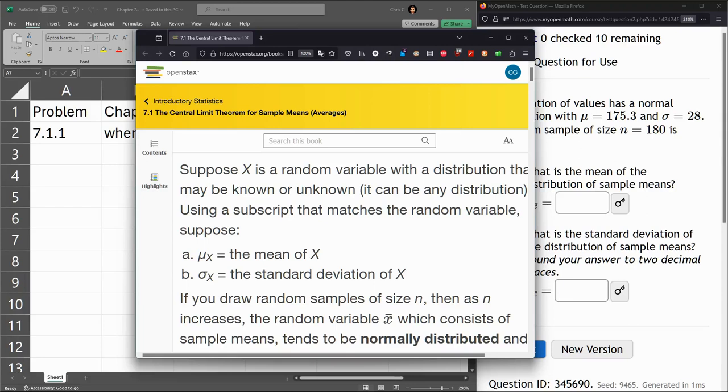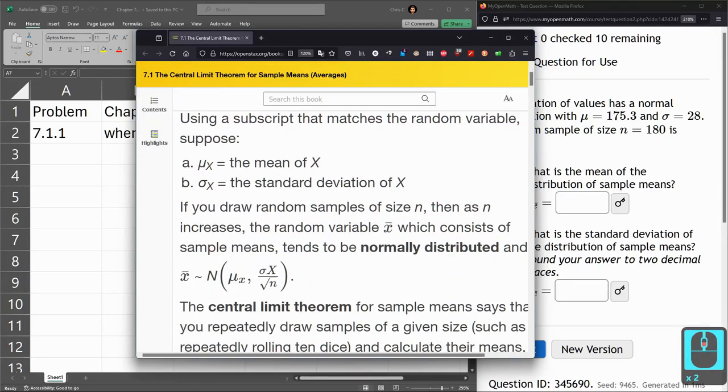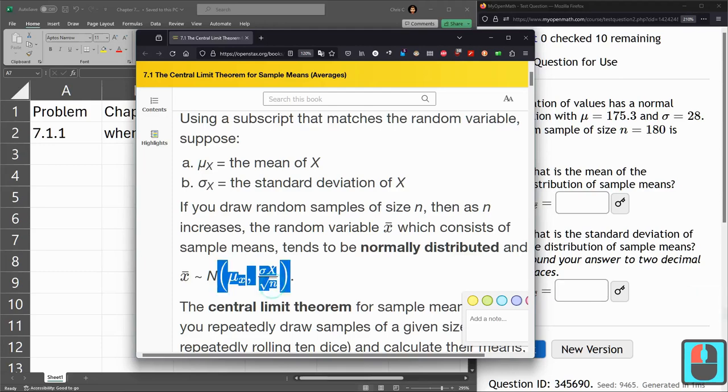And what this does is it basically decreases the standard deviation. And the calculation we're going to use is the standard deviation divided by the square root of that sample size right there.